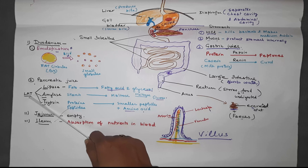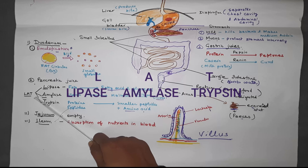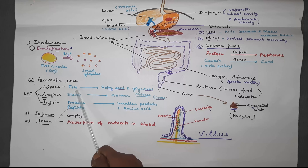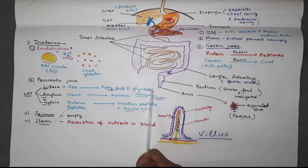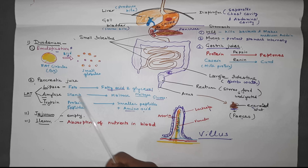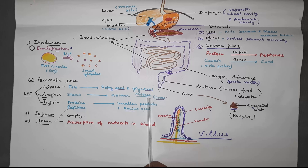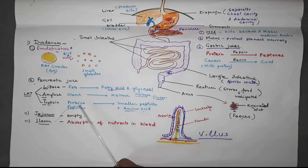The pancreas releases pancreatic juices of three kinds: lipase, amylase, and trypsin — you can remember this as LAT. Lipase changes small fat globules into fatty acid and glycerol, which are the end products of fat digestion. Amylase changes starch into maltose, and the maltose — including any previously formed maltose — is then changed into glucose by the enzyme maltase.